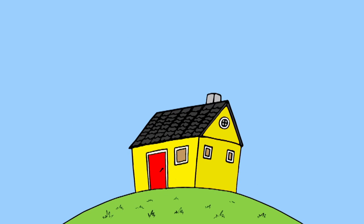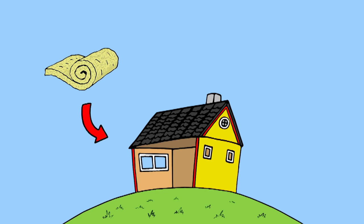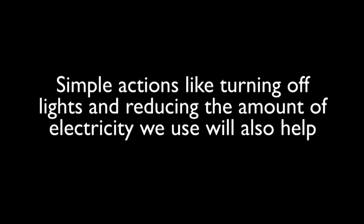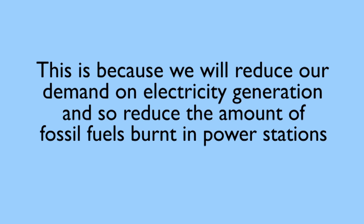We can also reduce outside particulate matter by ensuring that we are more energy efficient in our homes. Homes that are better insulated do not need as much heating or cooling, and so burn less fossil fuels. Similarly, simple actions like turning off lights and reducing the amount of electricity we use will also help, as we will reduce our demand on electricity generation and so reduce the amount of fossil fuels burnt in power stations.